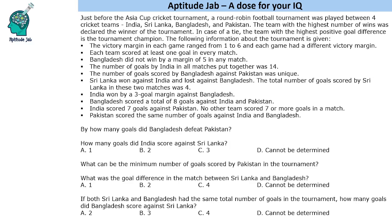This says that just before the Asia Cup Cricket Tournament, which is going to start very soon, a round-robin football tournament was played between four cricket teams: India, Sri Lanka, Bangladesh and Pakistan. The team with the highest number of wins was declared the winner. In case of a tie, the team with the highest positive goal difference is the tournament champion. The victory margin in each game ranged from 1 to 6 and each game had a different victory margin.